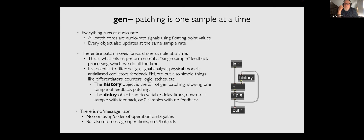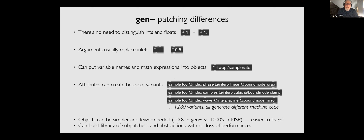There's also no order-of-operation ambiguities — everything is updated one sample at a time. Since you're updating things that often, there are no user interface objects inside a Gen~ patch, because updating stuff one sample at a time would bring your system to its knees. Graham says you should think of it like patching cables in a hardware modular synth. In Gen, you don't care about ints and floats — everything is a float, and the compiler does type inference for you on the fly. Arguments often replace inlets.